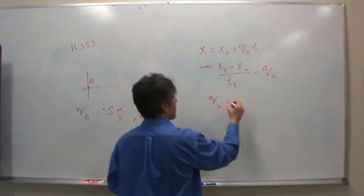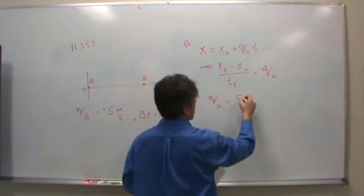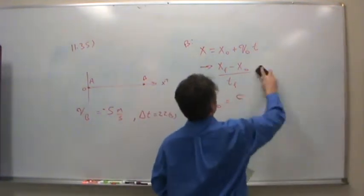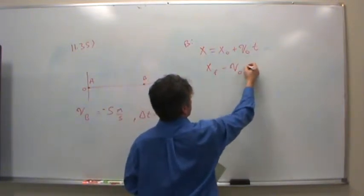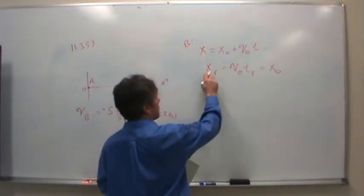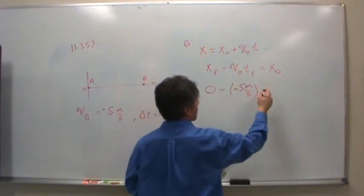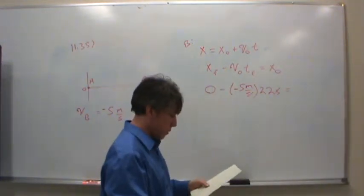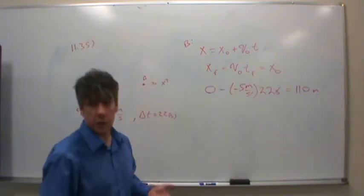Now we're interested in X initial. That's the unknown. Let's try this again. So X final less V naught T final would be X initial. The final position we know is zero. The speed is negative 5 meters per second. The final time is 22 seconds. Seconds go away and notice the negative signs cancel. So this is 110 meters from the origin. That's where bus B begins.